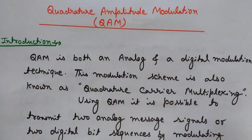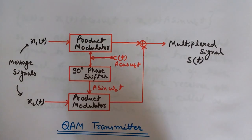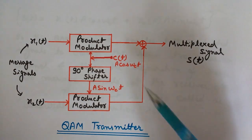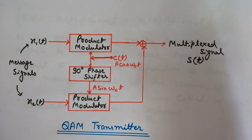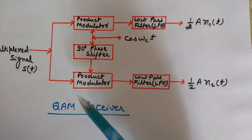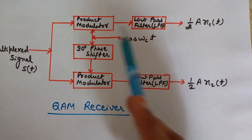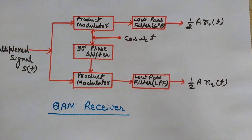Here we will see the basic concept of QAM, why it is called Quadrature Amplitude Modulation, the block diagram of the QAM transmitter, how each block works, the QAM receiver's block diagram, and also a little bit of mathematical analysis.